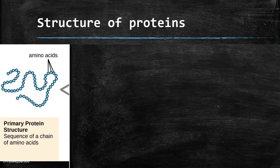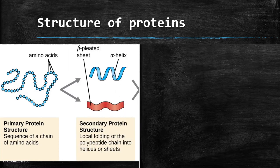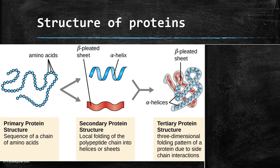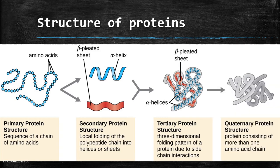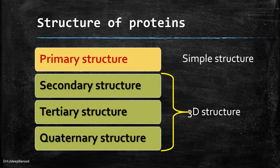The primary structure of protein is the sequence of a chain of amino acids — the linear sequence forming the backbone of a protein or polypeptide. Secondary structure is the spatial arrangement of a protein by twisting of the polypeptide chain. Tertiary structure is the three-dimensional structure of a functional protein. Quaternary structure is composed of two or more polypeptide chains referred to as subunits, and the spatial arrangement of these subunits is known as quaternary structure. Primary structure is a simple structure, whereas secondary, tertiary, and quaternary structures are 3D structures.